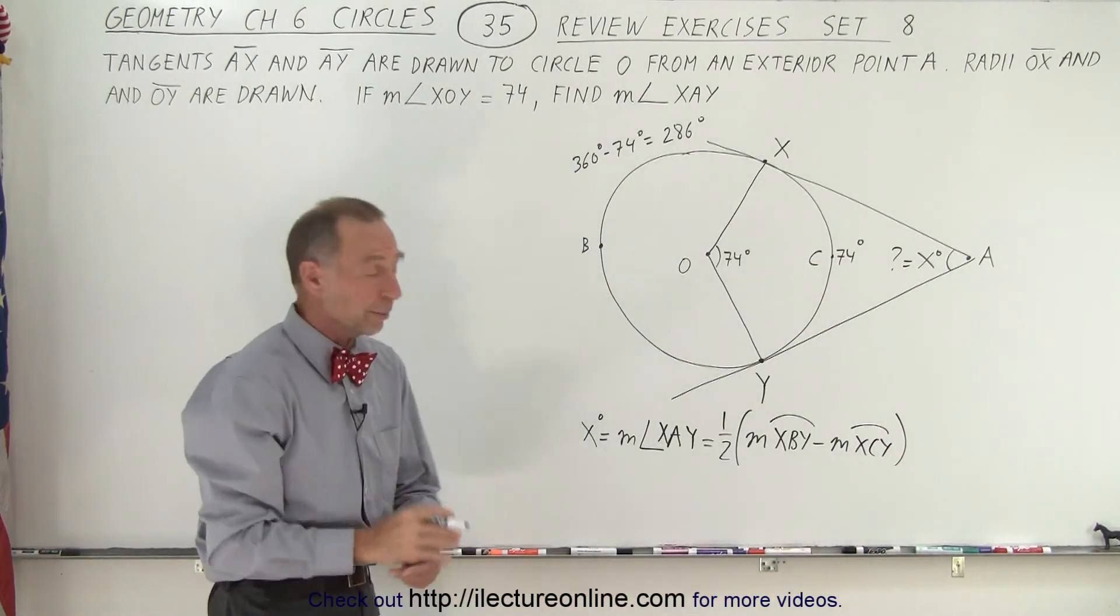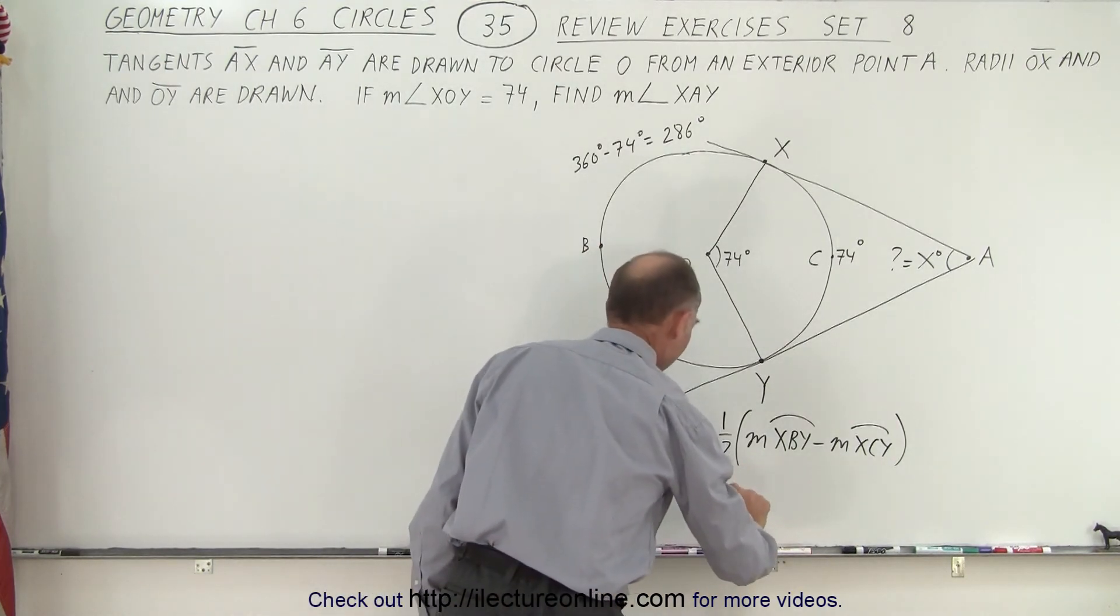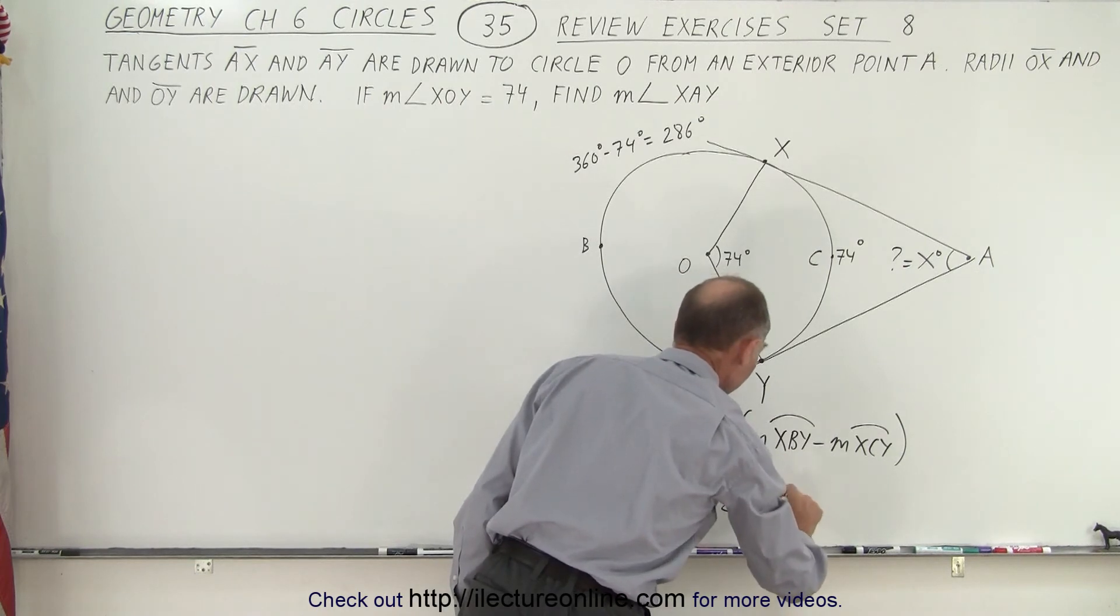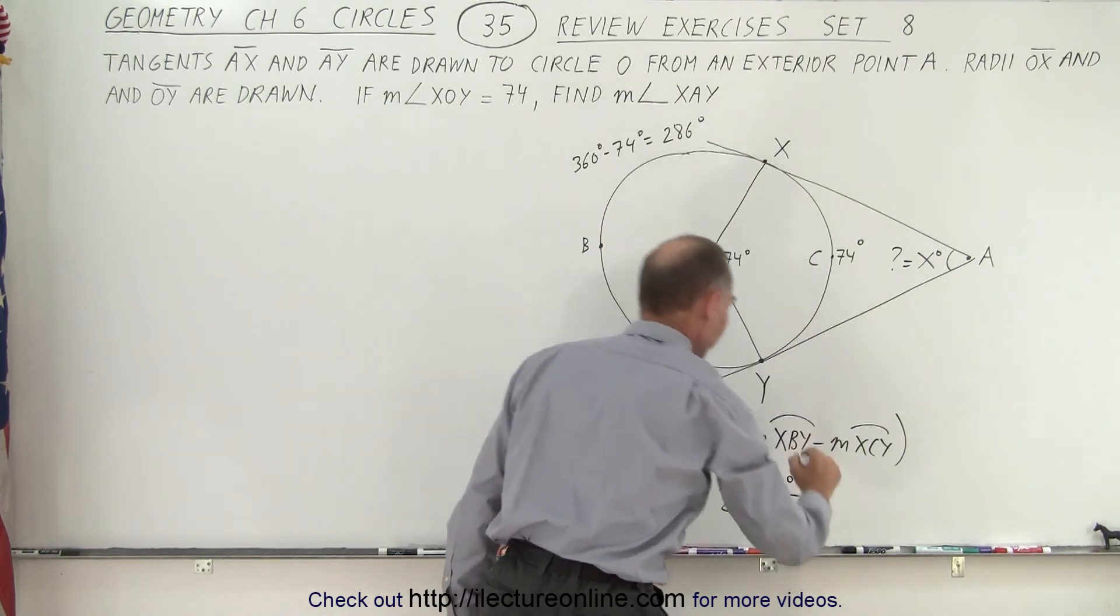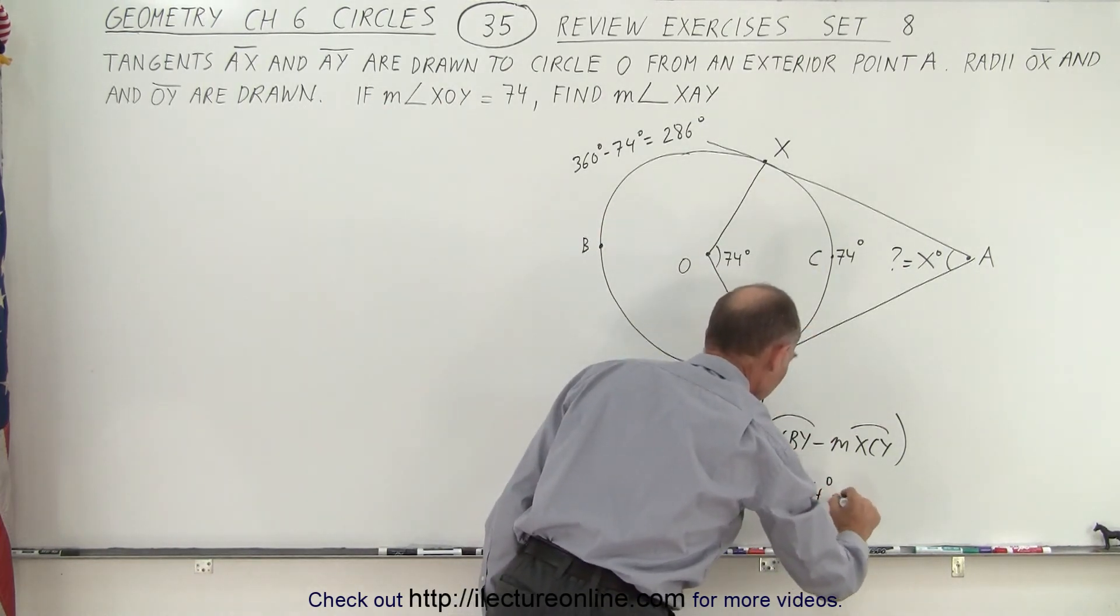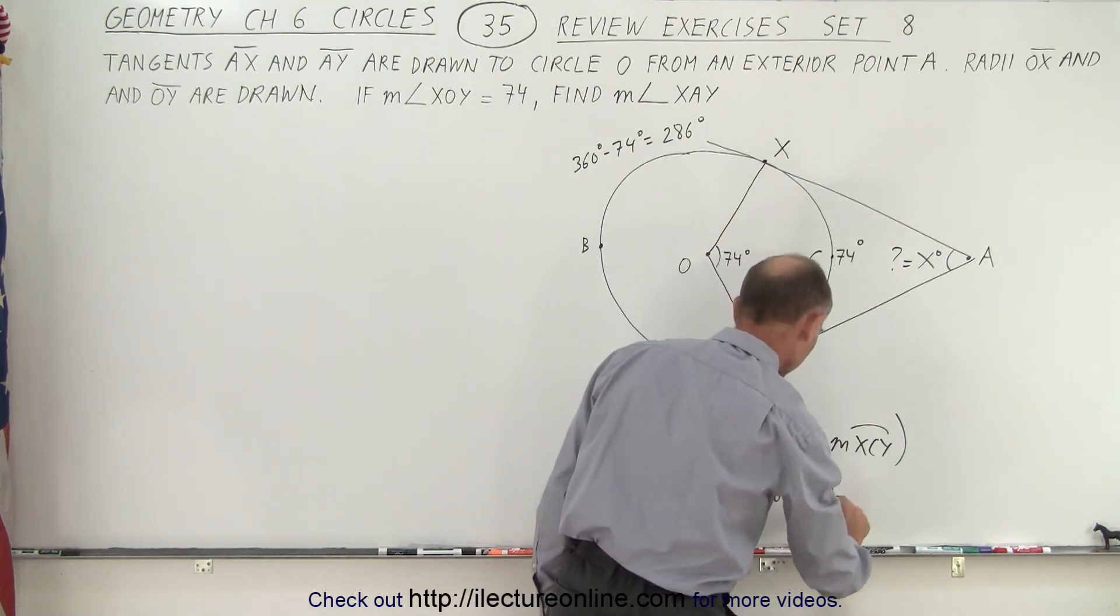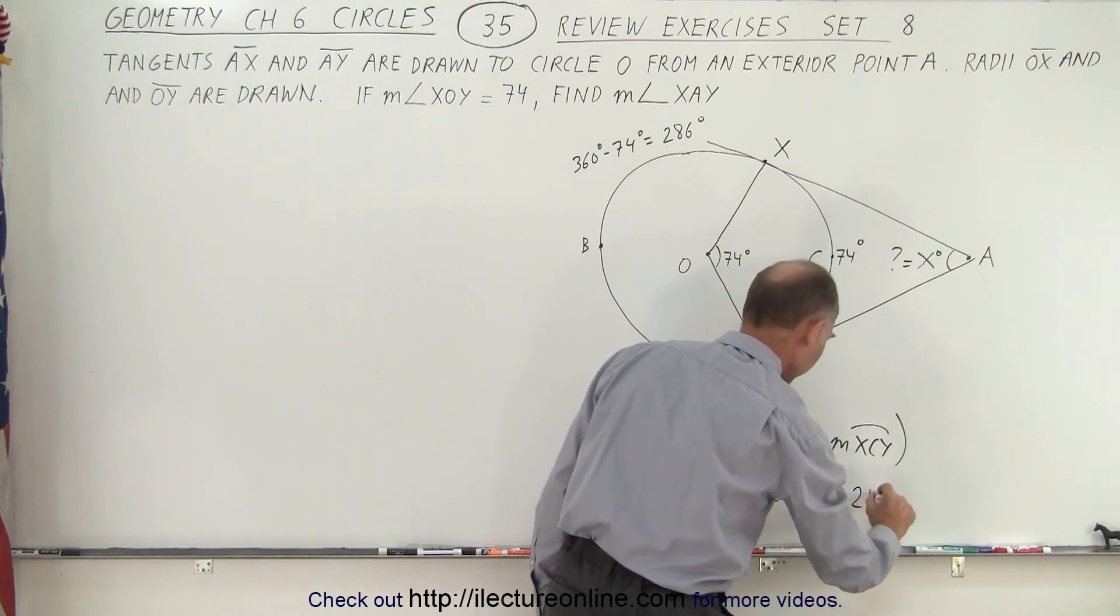Okay, now all we have to do is plug in the numbers and see what we get. So this is equal to one half the measure of this, which is 286 degrees, minus the measure of this, which is 74 degrees, which is equal to 212 degrees.